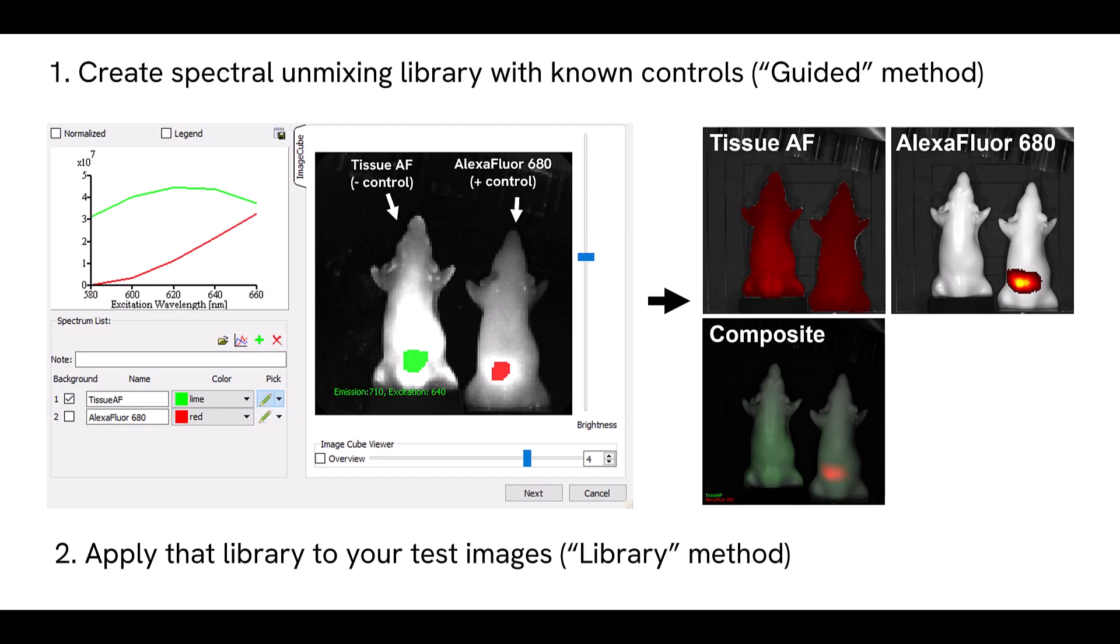The first step in spectral unmixing is to generate a library from known controls. After generating the library we can apply it to test animals that contain a mixture of probes to separate the signals. Saved libraries can be reused in subsequent time points of a longitudinal study. A library can also be reused in later imaging studies where the probes, mouse strain, and filter selections are the same.